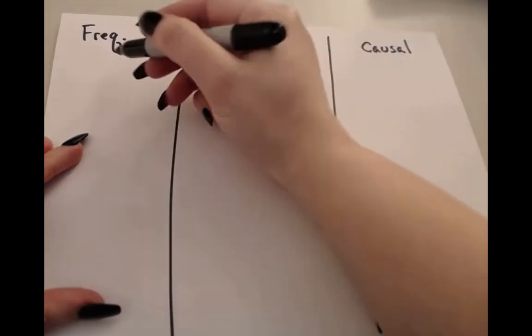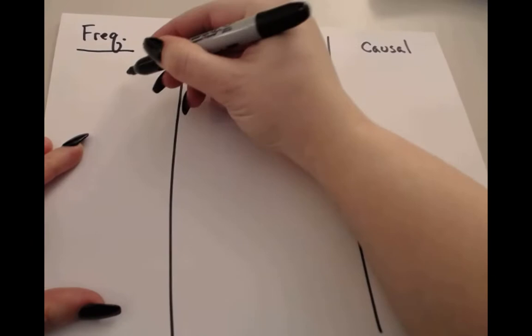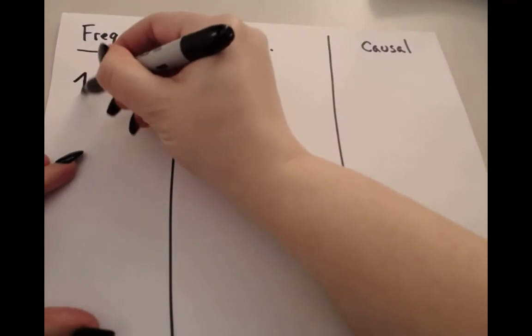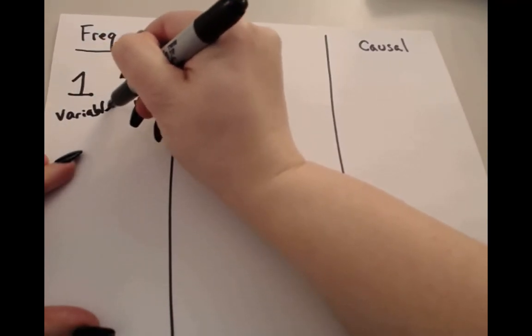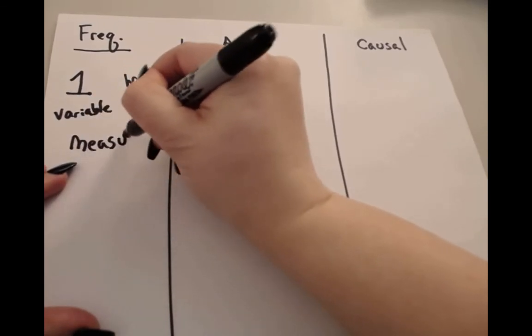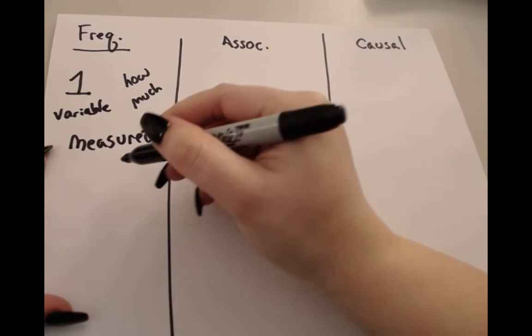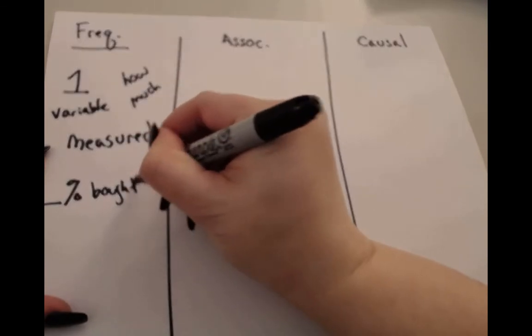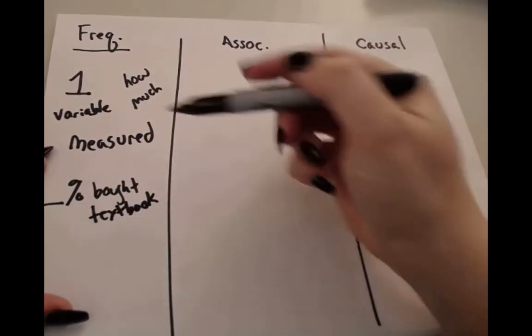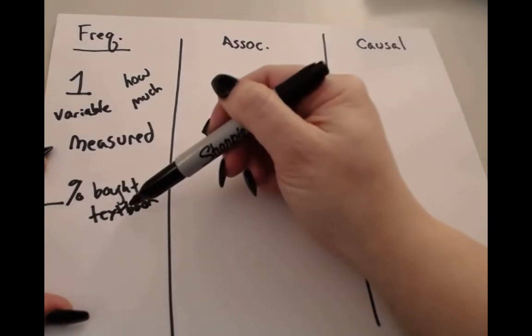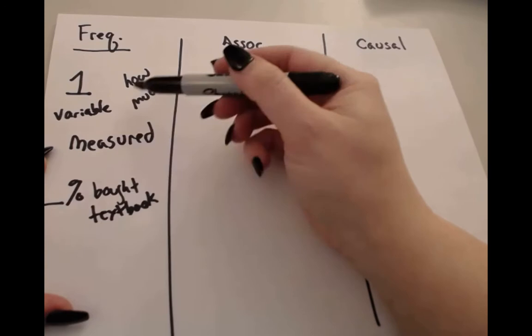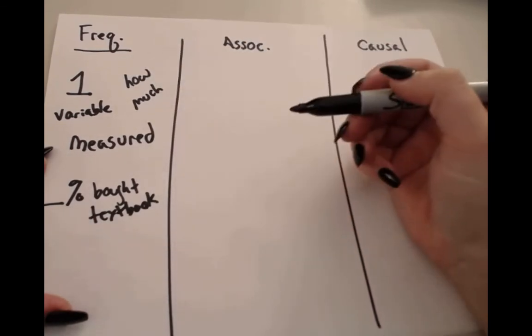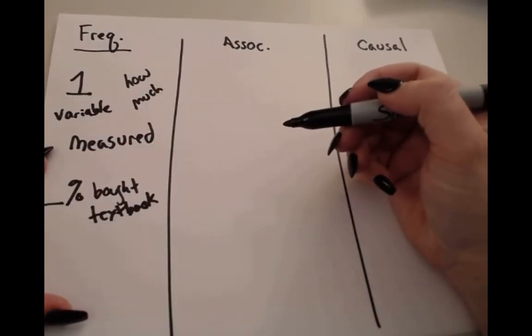In a frequency claim, we're literally trying to understand what is the frequency of something. So, how much or how often? In a frequency claim, there is one and only one variable, and that variable is only measured. So if I were to say something like, the percentage of students who bought the textbook, that would be a frequency claim, because I only measured how many students bought the textbook. There's only one variable here, and I'm describing how much. What is the frequency of students who bought the textbook? That's a frequency claim. A lot of times, frequency claims are about descriptive statistics.